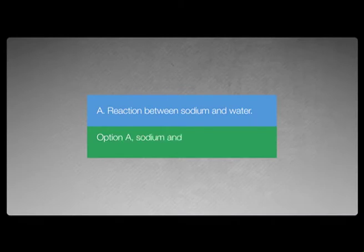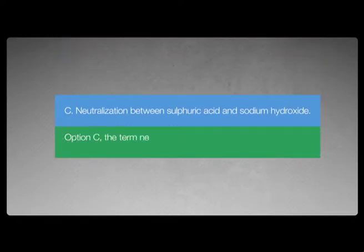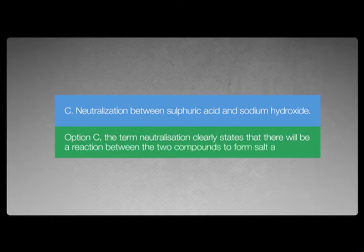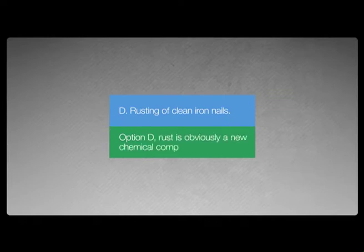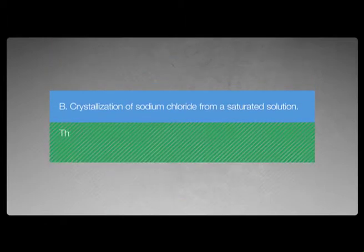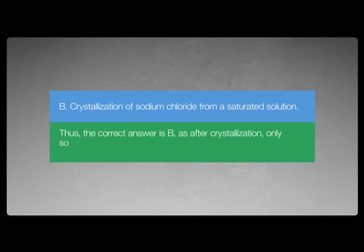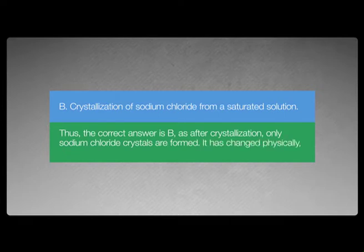To get the correct answer, you have to know which reaction gives you a new substance. Let's examine each option one by one. Option A: sodium and water produce a new chemical compound. Option C: the term neutralization clearly states that there will be a reaction between the two compounds to form salt and water. Option D: rust is obviously a new chemical compound. The correct answer is B, as after crystallization, only sodium chloride crystals are formed. It has changed physically, but it is the same chemical compound.